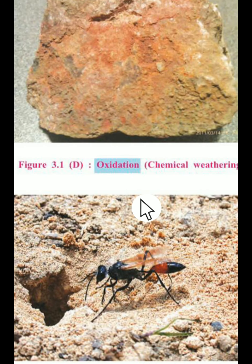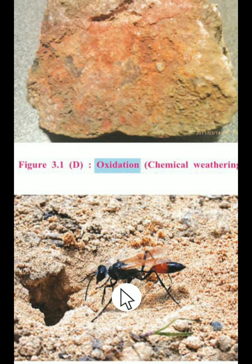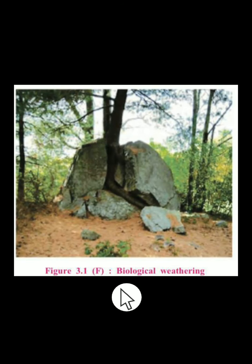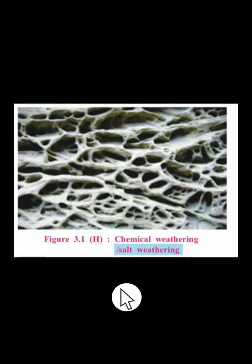You have got images of chemical weathering called oxidation, and biological weathering. One more example of chemical weathering, another of biological weathering, and an example of chemical weathering. So we have seen all these various examples and will see them in the lesson ahead.